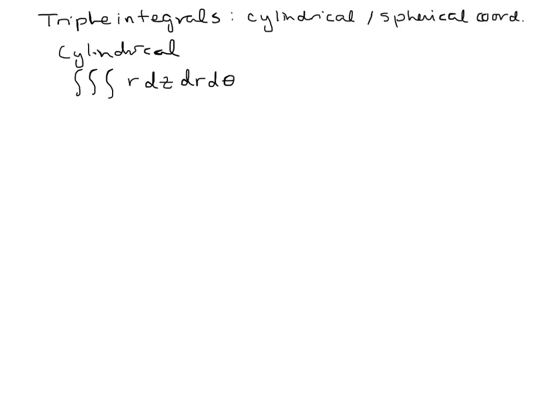For spherical coordinates, our coordinates are rho, phi, and theta. Phi is the one that goes from the positive Z axis down, and theta is the one that goes from the positive X axis around in a circle. The equivalent of that extra R factor for spherical coordinates is rho squared sine of phi, so instead of tacking on R dR dtheta, we tack on rho squared sine of phi to the integral.